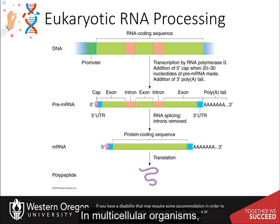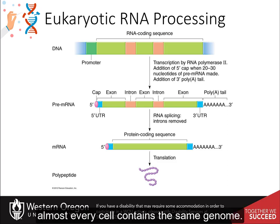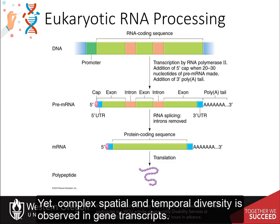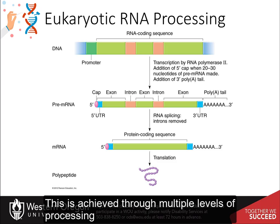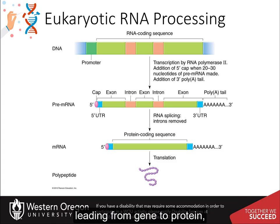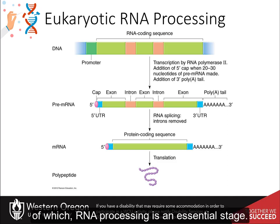In multicellular organisms, almost every cell contains the same genome, yet complex spatial and temporal diversity is observed in gene transcripts. This is achieved through multiple levels of processing leading from gene to protein, of which RNA processing is an essential stage.